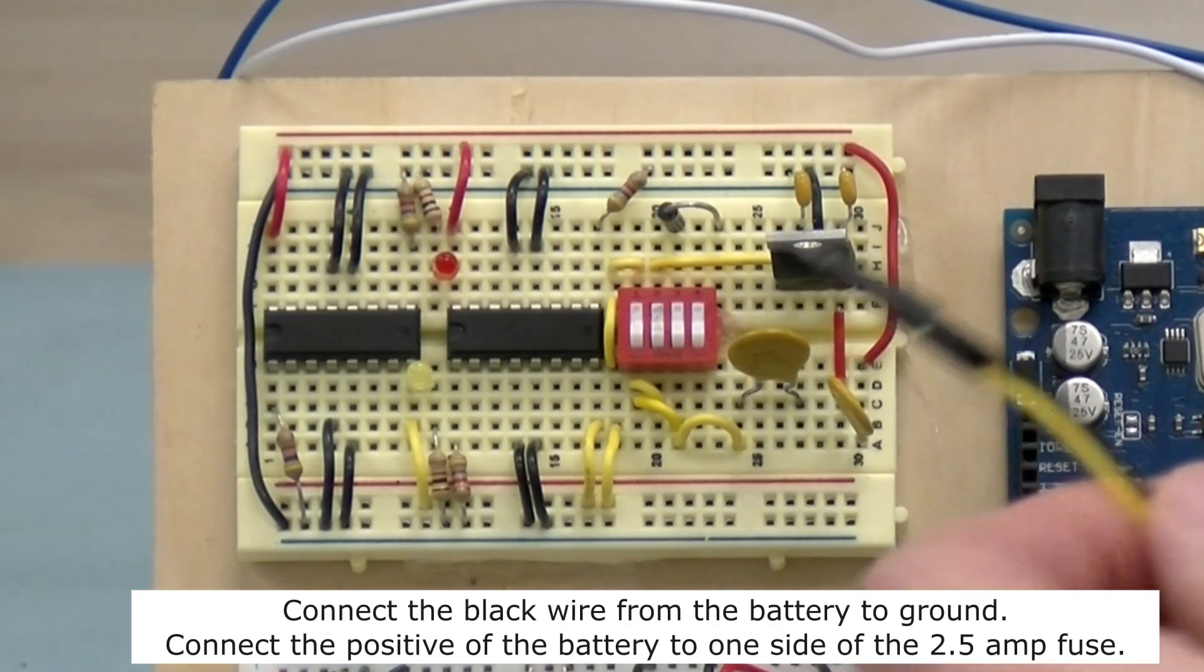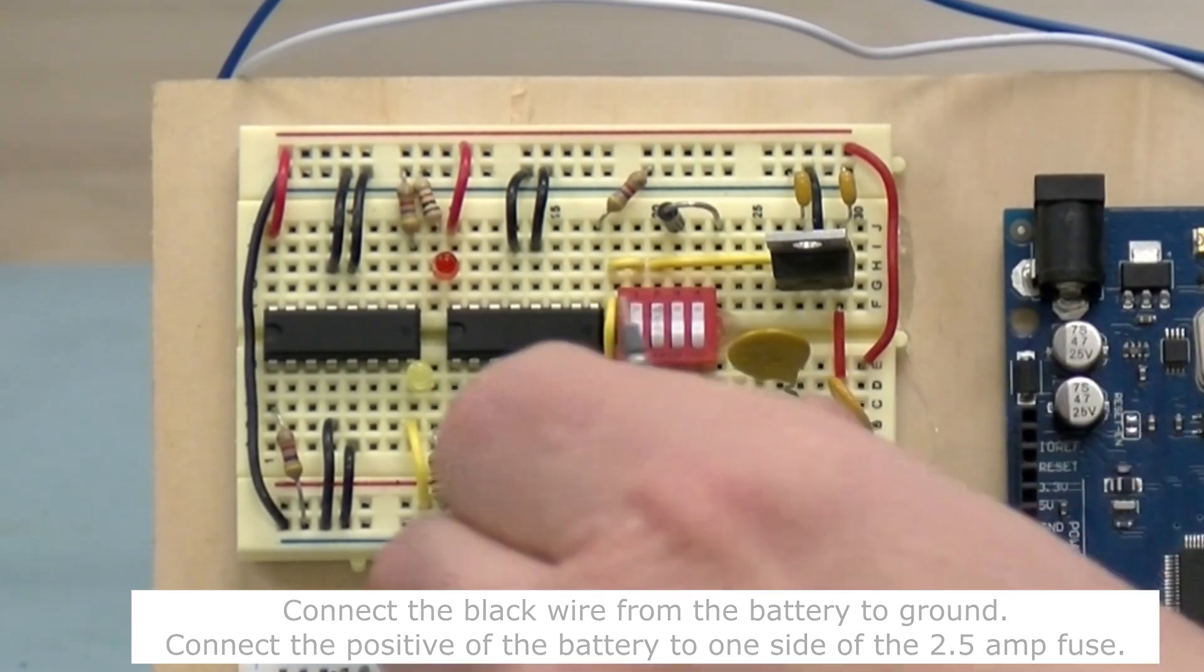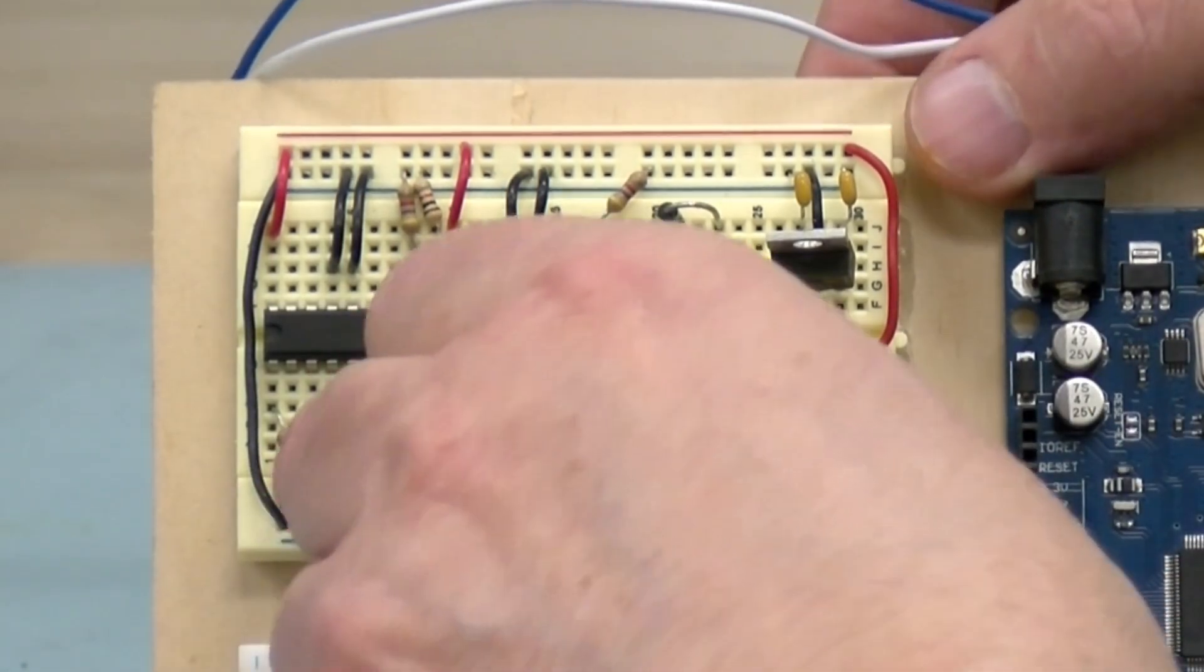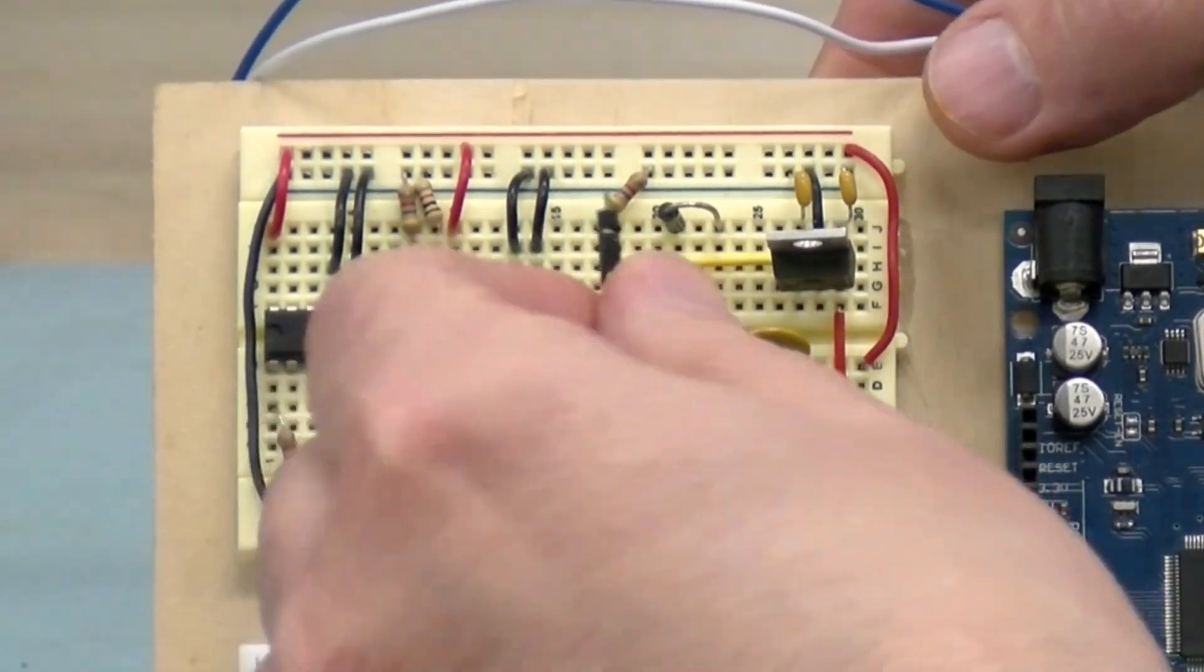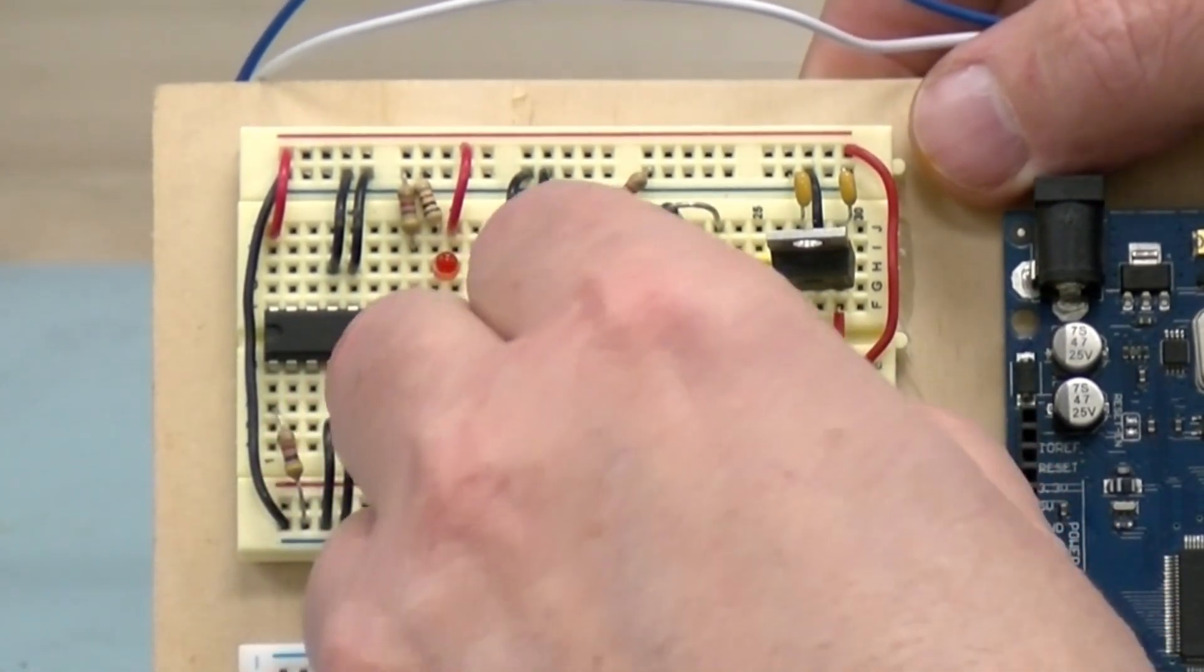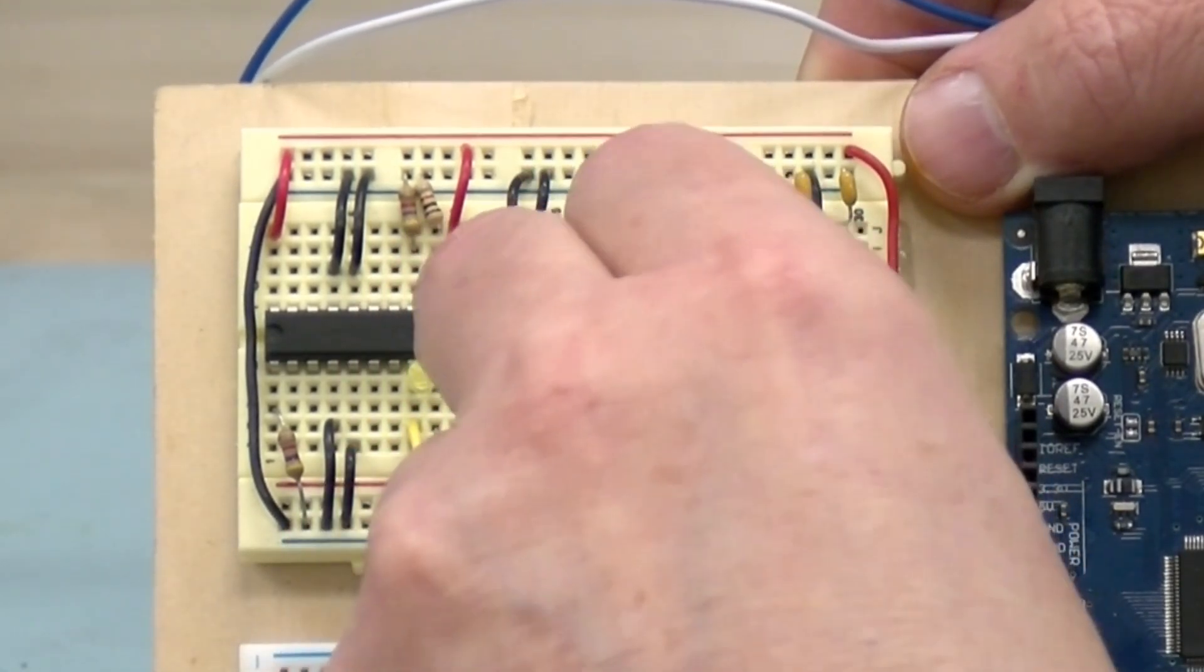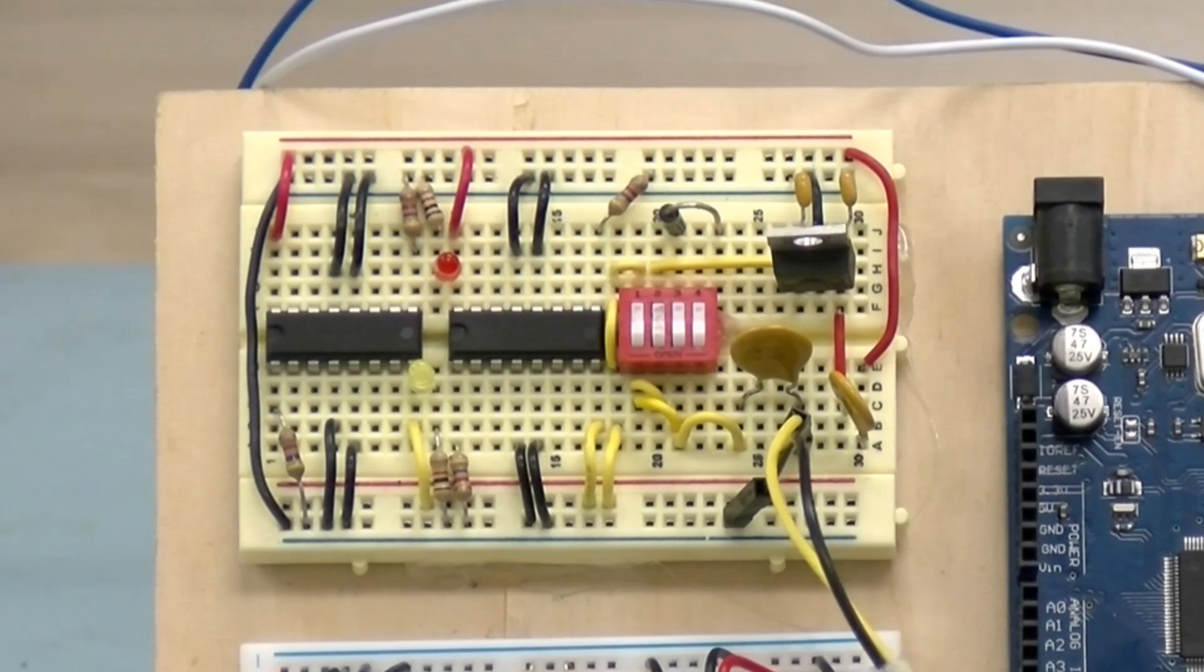I'm going to join these to the board, so the black is going to go to the ground and the yellow—watch where it goes—is to the side on the fuse, which is the 2.5 amp fuse that's going to supply power to all of the other points we need power to.